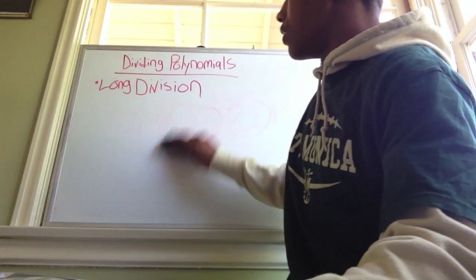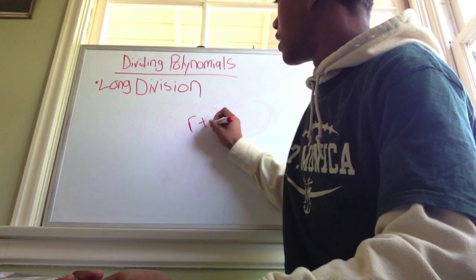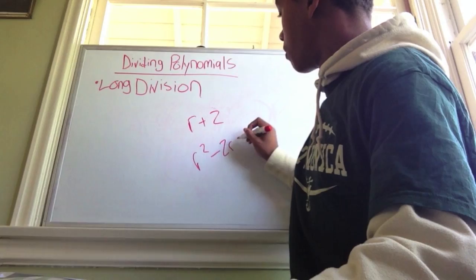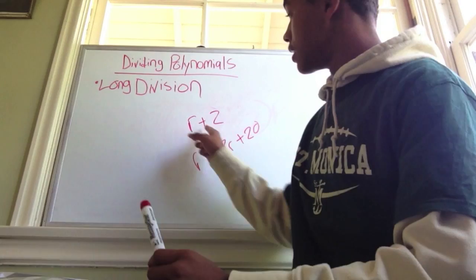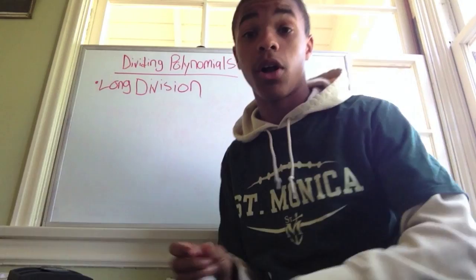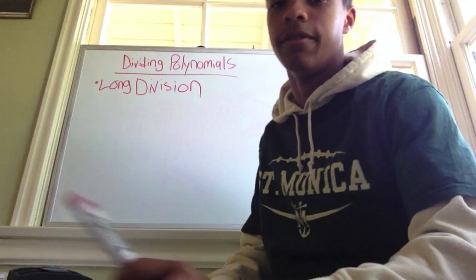We're going to be dividing two polynomials. So we're going to be dividing something like r plus 2 into r squared minus 2r plus 20. That's long division with polynomials. In order to do this, you have to know how to do simple long division — the hard stuff.